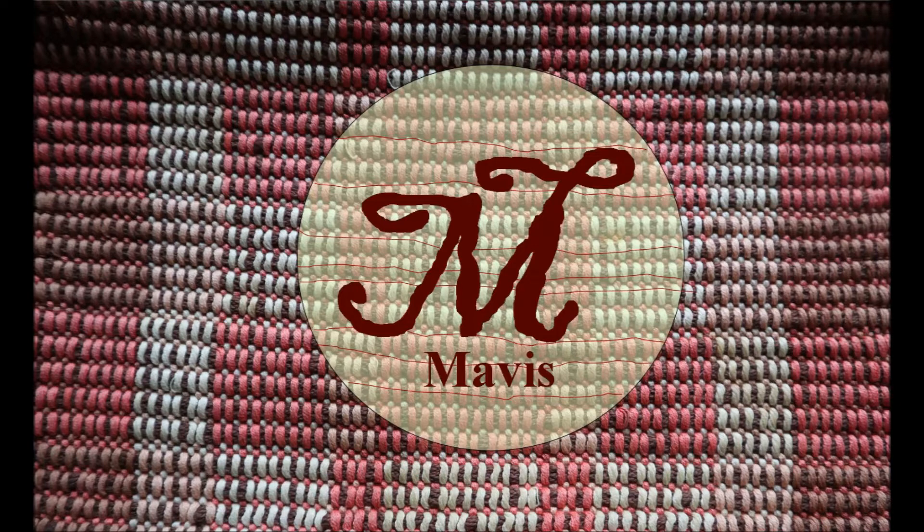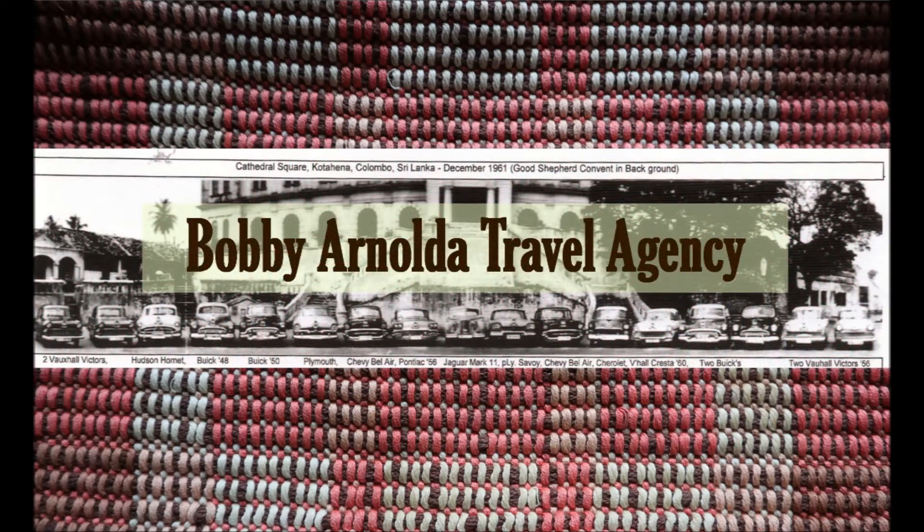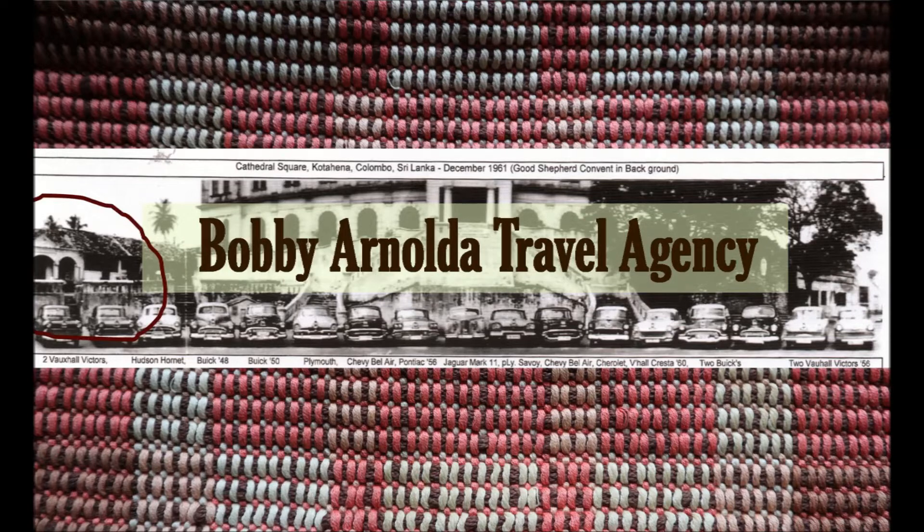But while I was looking her up, I came across the Bobby Anolda Travel Agency. Now Bobby Anolda was Mavis's uncle. He was also my dad's uncle. And on his website, there were loads of photos of vintage cars, including this one that was actually taken in front of my mom's old school. And if you look in the far left corner of the picture, you can just see part of my dad's parents house.